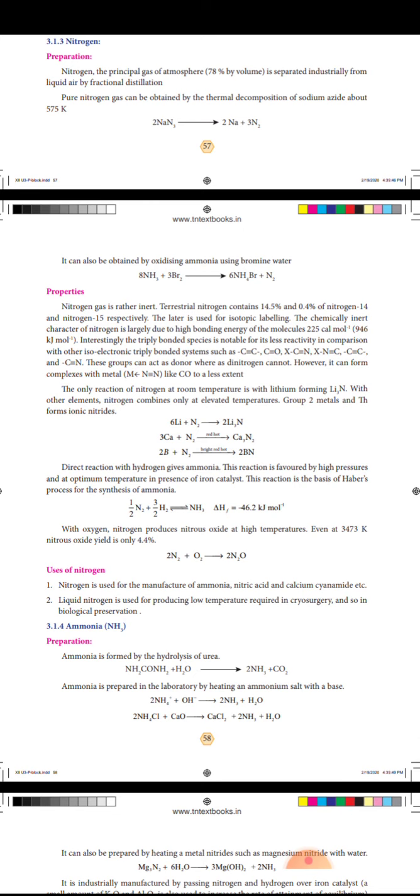Pure nitrogen gas can be obtained by thermal decomposition of sodium azide at about 575K: 2NaN3 gives 2Na plus 3N2.